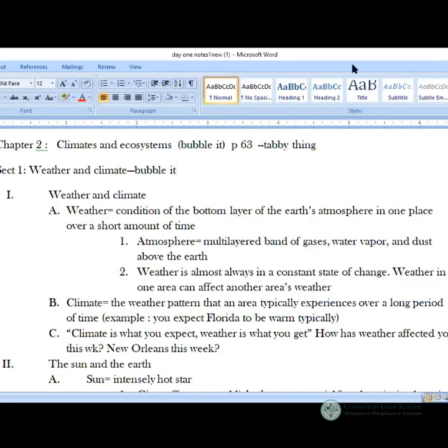So the first thing we're going to talk about is weather. Notice the equal sign, so you should highlight it. Weather is the condition of the bottom layer of the Earth's atmosphere in one place over a short amount of time. So when you talk about weather you're usually only talking about maybe a day, maybe a week. You notice that when you watch the news, the weather forecaster does not tell you the weather for the whole month. They usually do it for a short amount of time. So it could be a week, it could be a couple of days, whatever it might be.